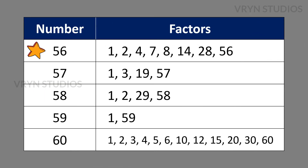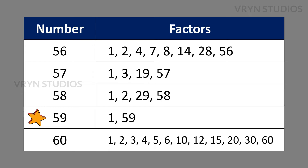The factors for the number 56 is 1, 2, 4, 7, 8, 14, 28 and 56. The factors for the number 57 is 1, 3, 19 and 57. The factors for the number 58 is 1, 2, 29 and 58. The factors for the number 59 is 1 and 59. The factors for the number 60 is 1, 2, 3, 4, 5, 6, 10, 12, 15, 20, 30 and 60.